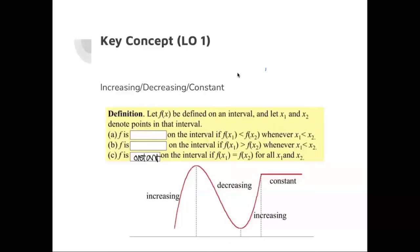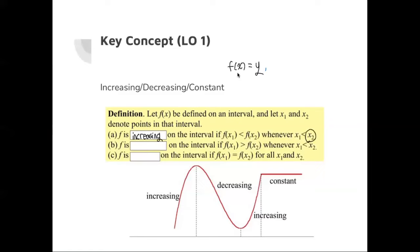Now we're going to learn about increasing, decreasing, and constant. Let f(x) be defined on an interval, and let x1 and x2 denote points in that interval. F is increasing on the interval if f(x1) is less than f(x2) whenever x1 is less than x2. What this means is: if x2 is greater than x1, then the corresponding y value for x2 should also be greater than the y value for x1 in order for the graph to be increasing.